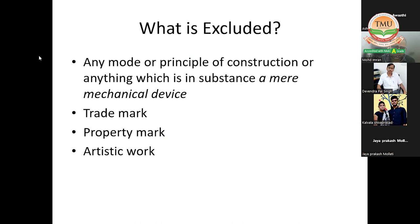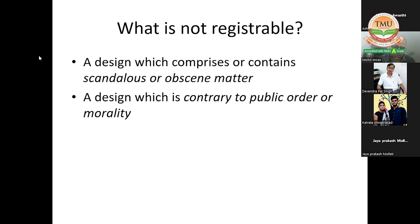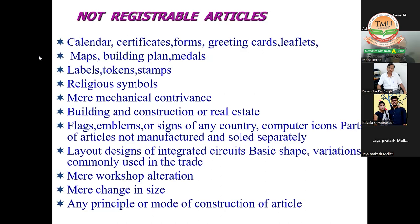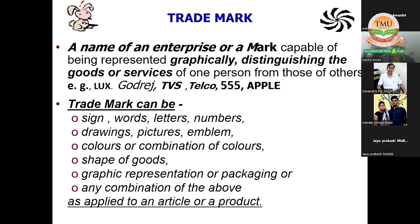What is not registrable as a design: something which is not new or original; something already disclosed to the public anywhere in the world prior to filing; a design not significantly distinguishable from known designs or combinations of known designs; a design which comprises scandalous or obscene matter; or a design contrary to public order or morality. Examples of excluded items include religious symbols, labels, tokens, building plans, medals — these are all excluded from design registration.